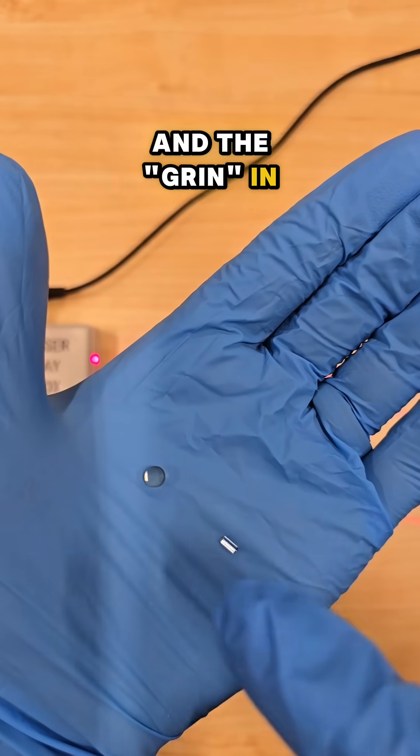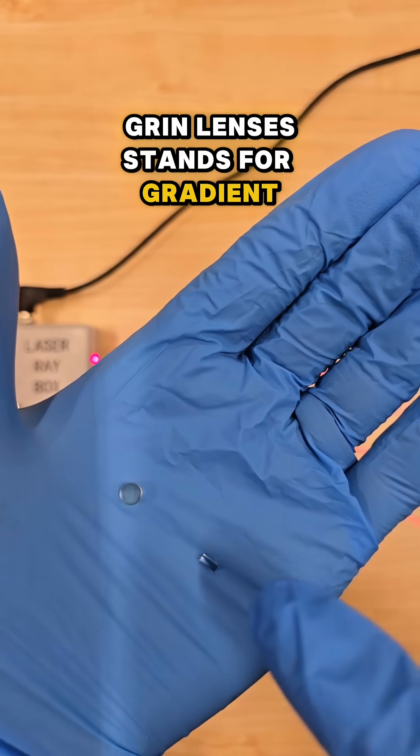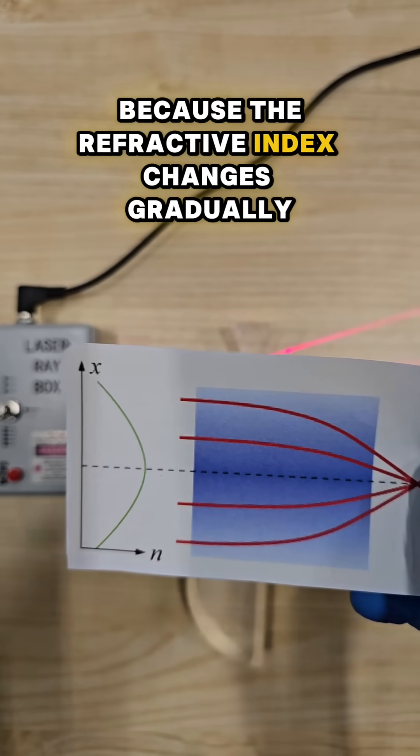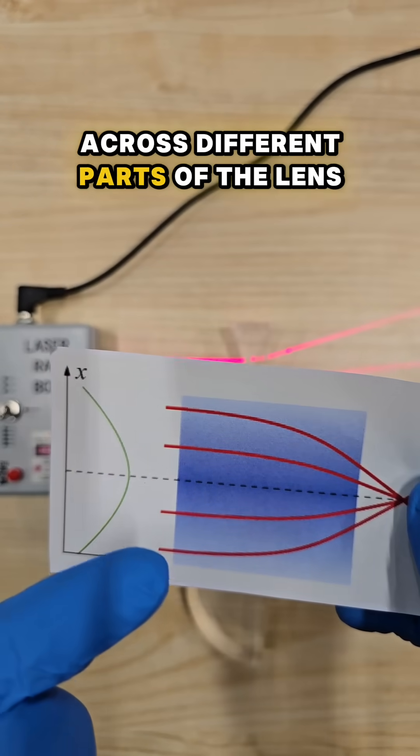And the GRIN in GRIN lenses stands for gradient refractive index, because the refractive index changes gradually across different parts of the lens.